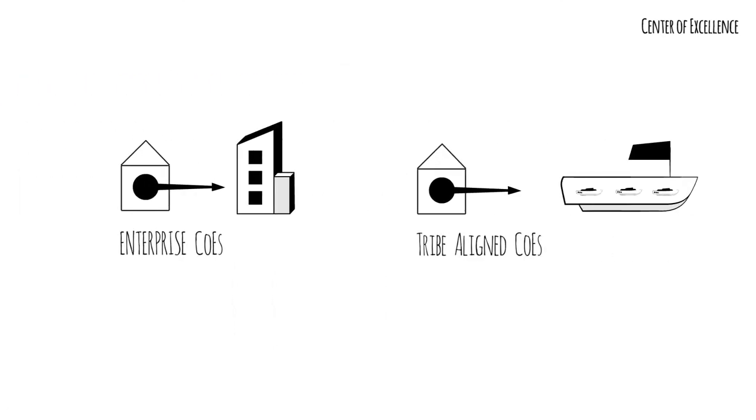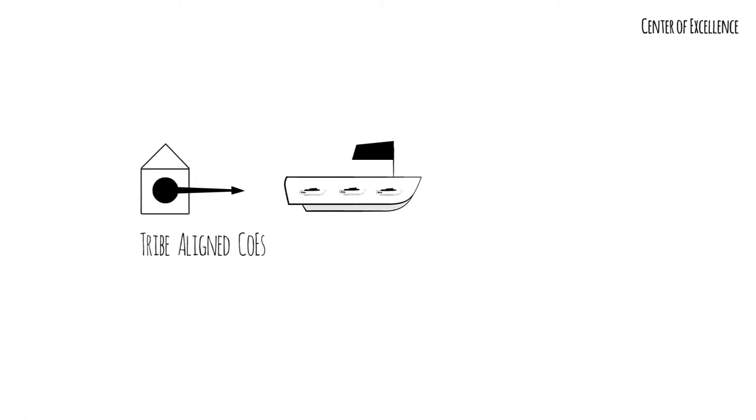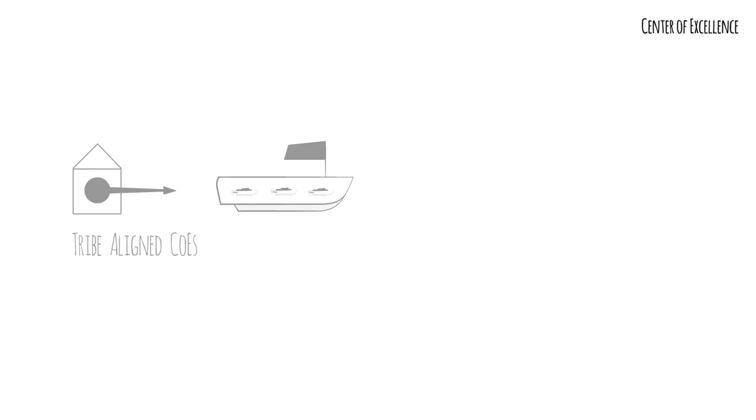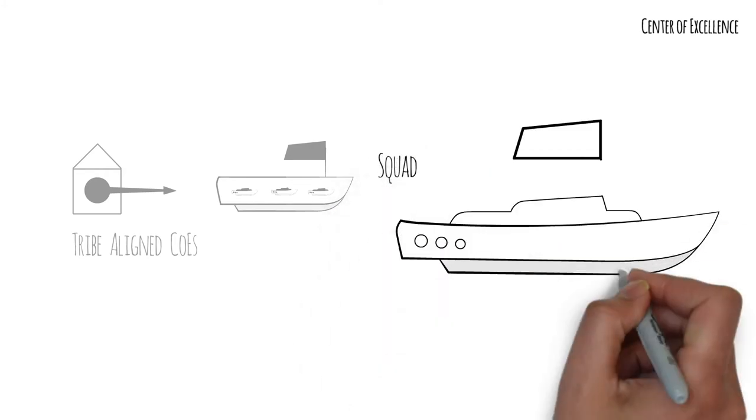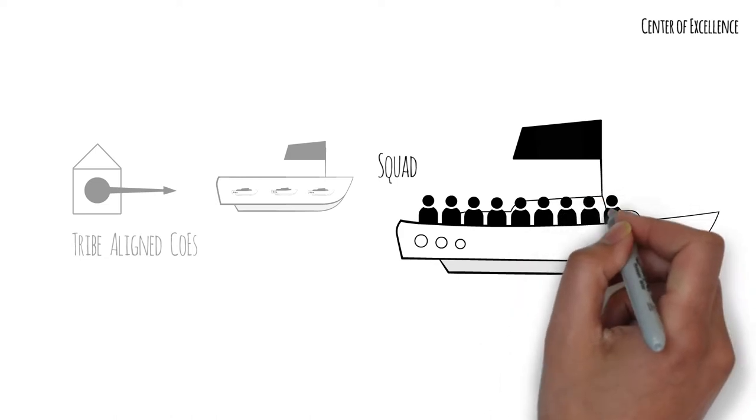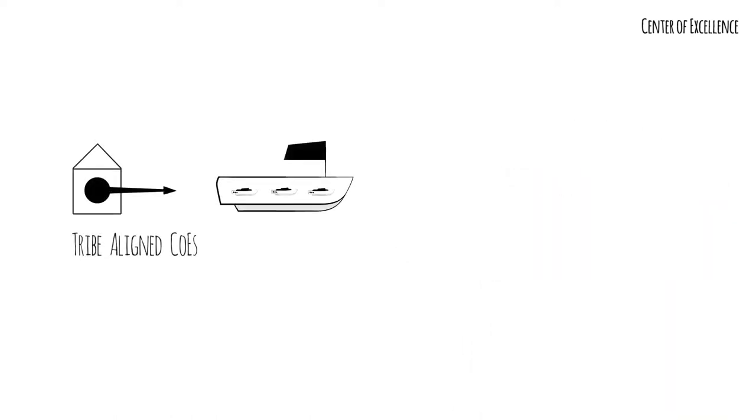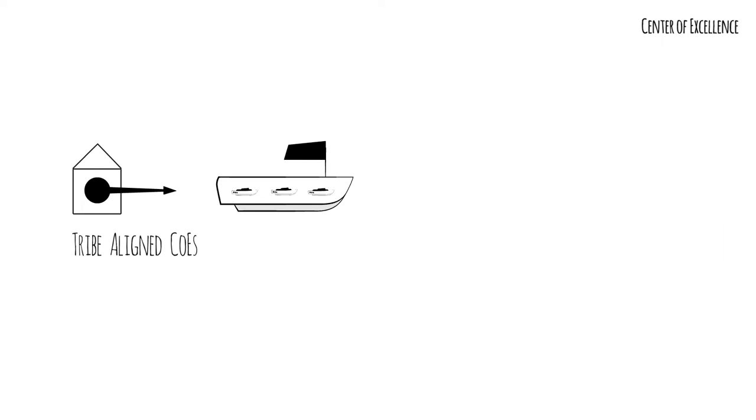Next, let's switch gears to Tribe Aligned COEs. Before we drill deeper, let's remind ourselves that an Agile Squad is a group of cross-functional, persistent and dedicated resources who have end-to-end responsibility for a specific mission. Because of our role in the industry at DTCC, we have many specialised functions.